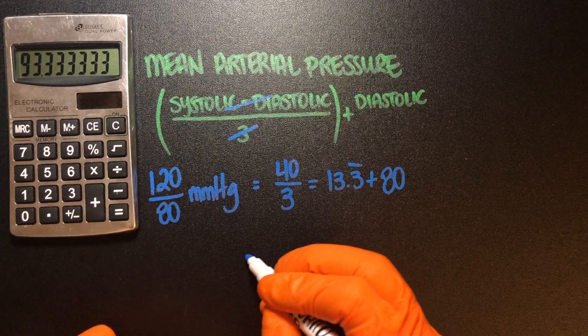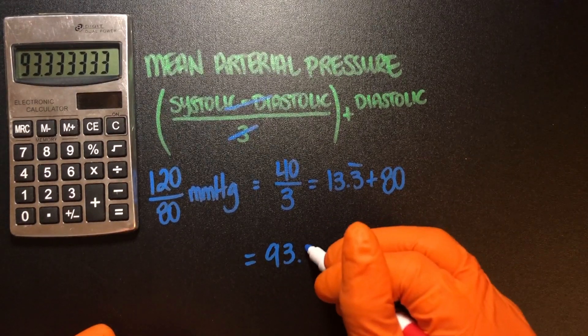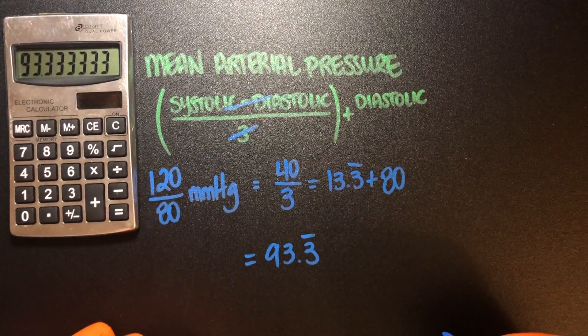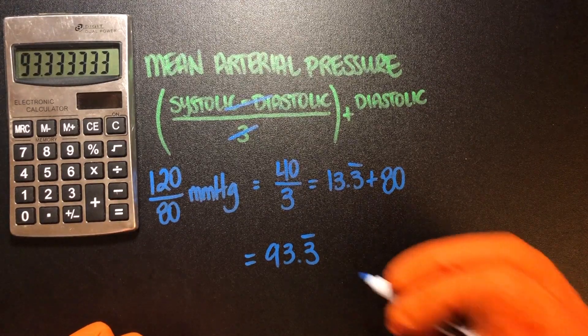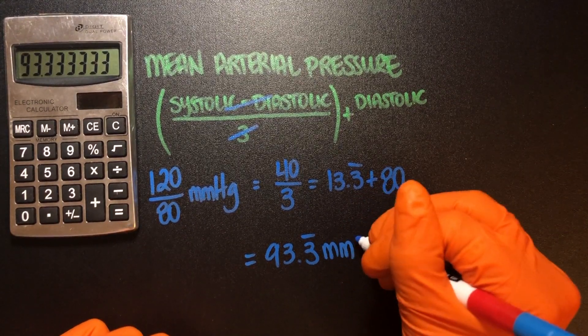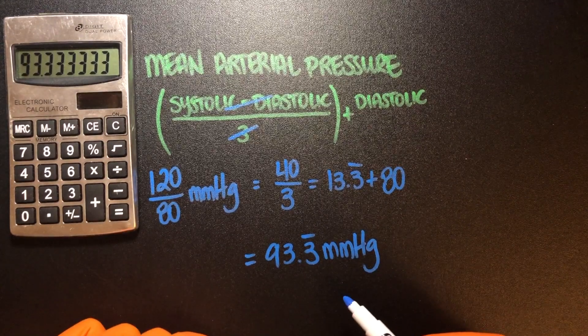That gives us 93.3 repeating. Always include your units and those units will be millimeters of mercury.